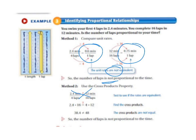And 2.4 times 16 is 38.4. That does not equal 48. So the cross products are not equal. So the number of laps is not proportional.